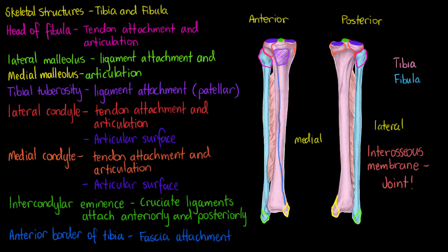Finally, the last structures we're going to look at are the articulation points between the two bones themselves, called the tibiofibular joints. Just like on our forearm, we're going to have one proximally and one distally. The proximal tibiofibular joint is connected by ligament, and the distal joint at the bottom of the bone where the two bones meet is also connected by ligament.